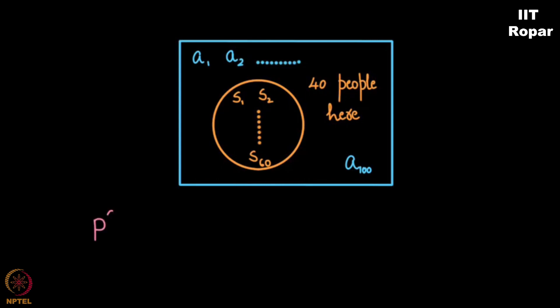That is called P complement. We denote it as P^C which is simply this set U, which is A1, A2 up to A100.